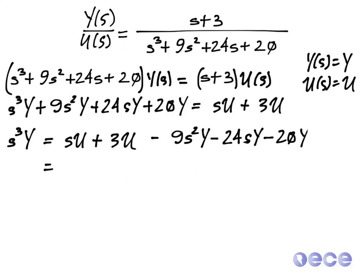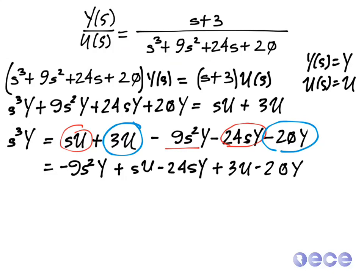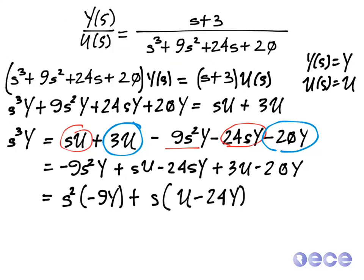Now I'm going to combine terms. So combining terms: minus 9s²y, then combining the s pieces: plus s times u minus 24s times y, and then combining the pieces that don't have any s multiplier: plus 3 times u minus 20 times y. I can isolate these now, writing: s² times (−9y) + s times (u − 24y) + (3u − 20y), all equal to s³ times y.